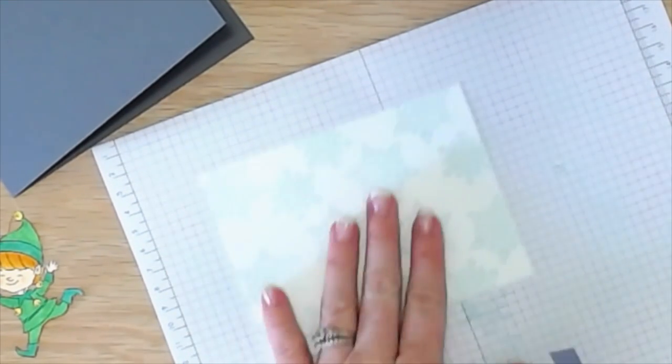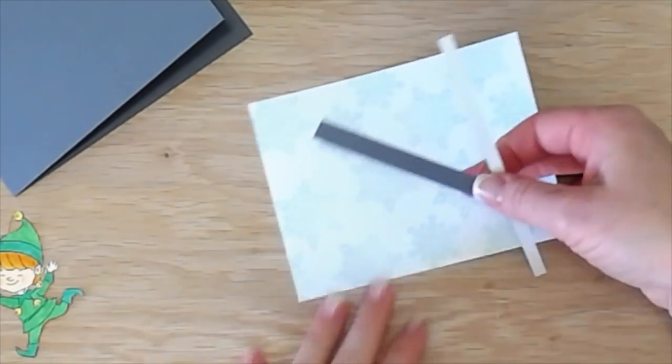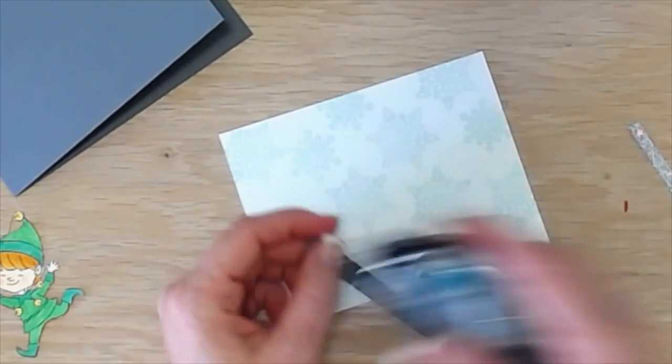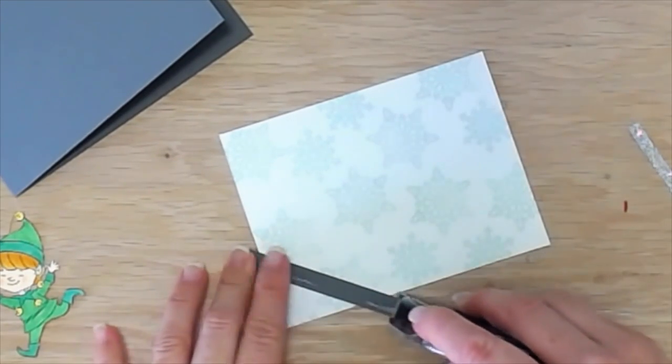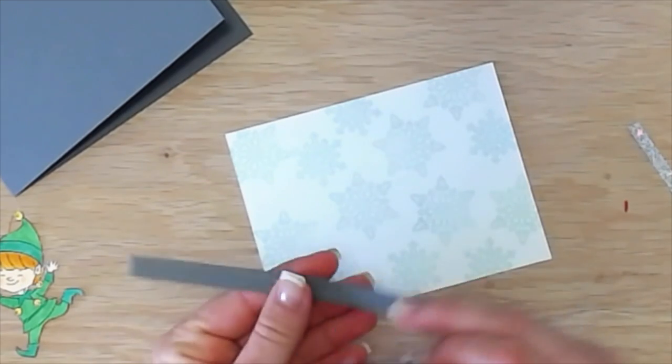And then I've got, oh, by the way, this is a Whisper White cardstock and it is cut at four by five and a quarter. And then I have a piece of basic gray here and it is cut at a half inch by five and a quarter.